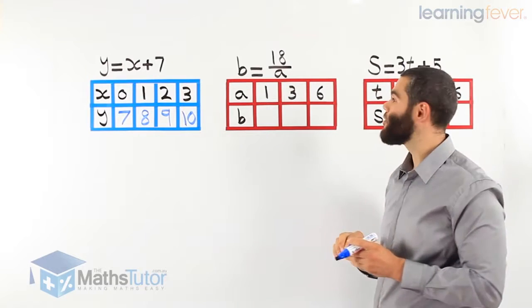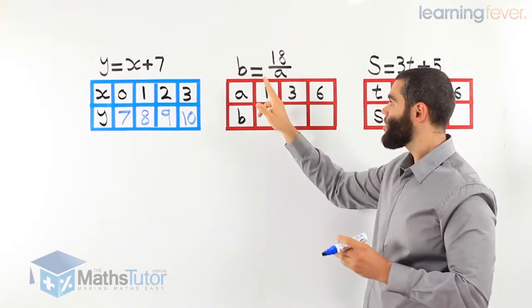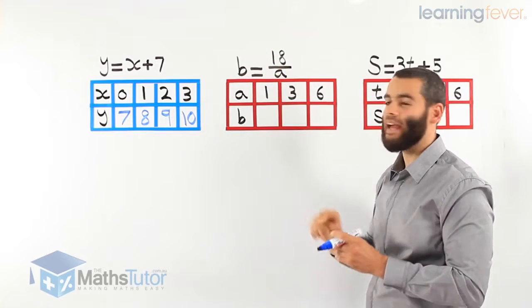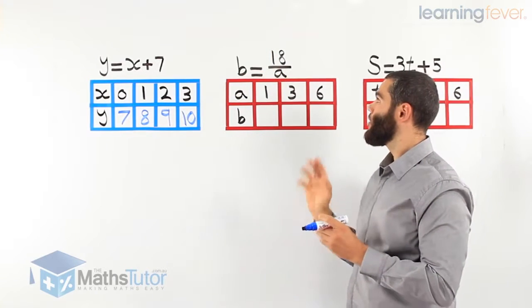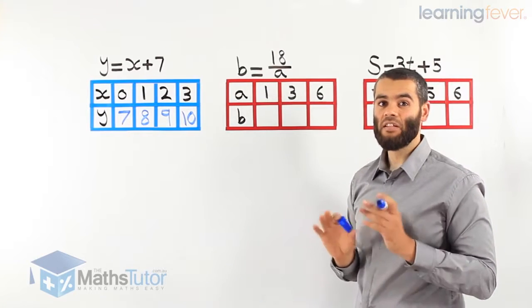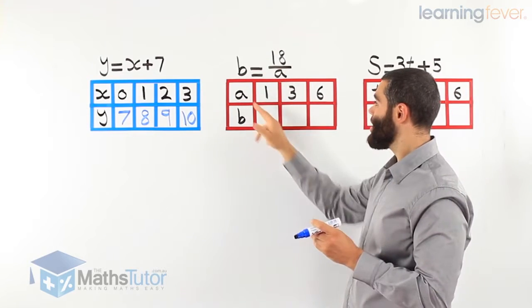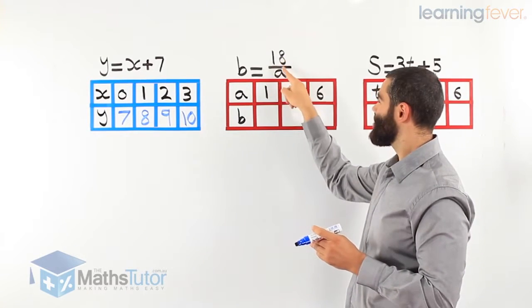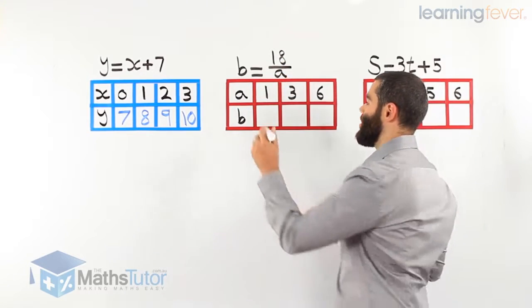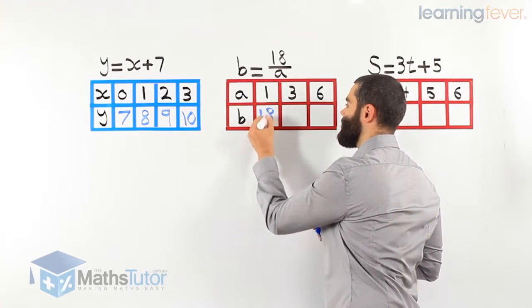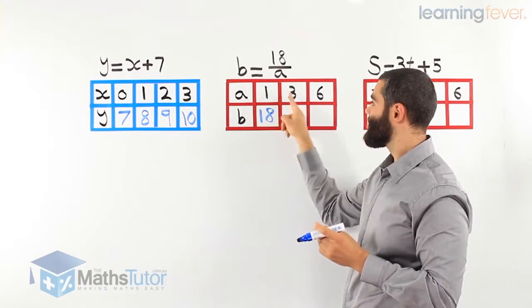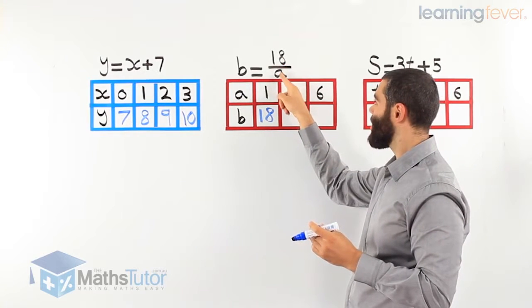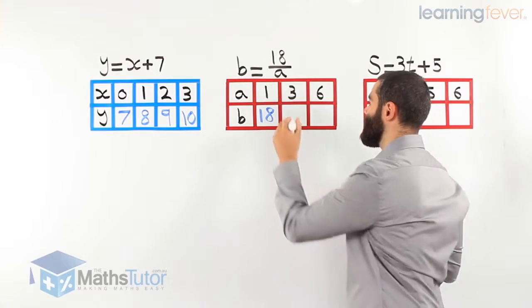Let's see what you can do here. The rule says b is going to equal 18 divided by a. Now here, a for the first one is going to be 1, so 18 divided by 1 is 18. The next number, a is 3, so we replace a with 3. 18 divided by 3 is going to be 6.